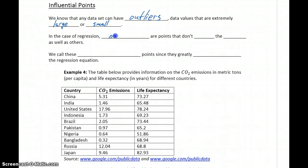In the case of regression, outliers are points, since we're talking about pairs of values, so x, y coordinates, that don't fit as well to the general pattern.